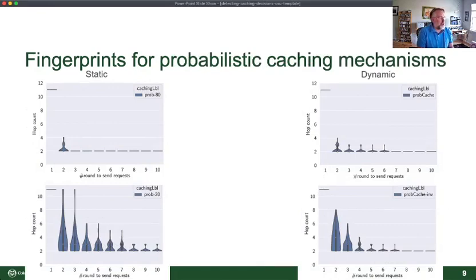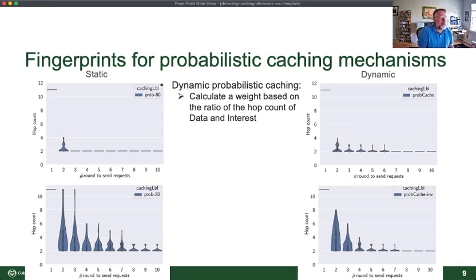Some other statistics here. Here are cases of caching, probability 80, probability 20, dynamic, probabilistic caching. You'll notice they have slightly different configurations. The interesting thing is that you can actually start to figure out what the caching probabilities are that are in use by the shapes of these graphs. So here's another fascinating result. It's not just I can tell you if it's LCD or CEE or probabilistic. I can actually, for the probabilistic ones, start to estimate what the probability being used to cache data is.